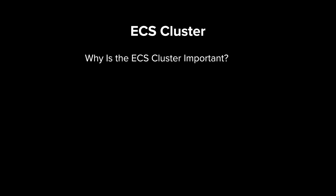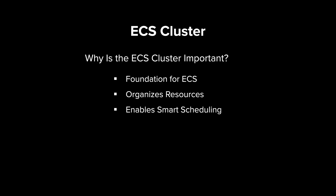An ECS cluster is more than just a container for compute — it's the foundation of everything in ECS. Without a cluster, ECS wouldn't know where or how to run your containers. It helps you organize resources, whether you're using EC2 or Fargate, by grouping them into a manageable unit. ECS uses this cluster to schedule tasks smartly: when you run a task, ECS automatically decides the best place to run it — checking for available CPU, memory, and placement strategies, then choosing the most optimal location. As your application scales, the cluster allows you to scale your tasks and infrastructure as needed. It also serves as the scope for monitoring, health checks, and logging, making it easier to troubleshoot and maintain.